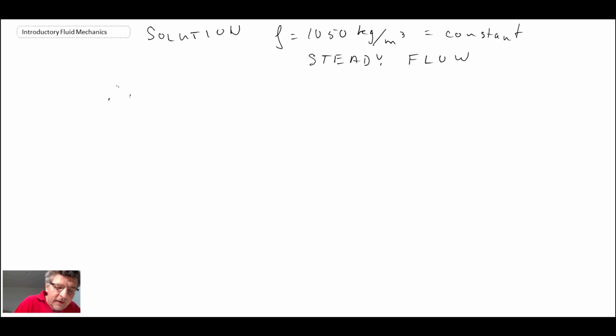So given that it's incompressible steady flow, we can write the mass conservation equation as being this integral across the control surfaces. These are the three control surfaces where we have mass crossing the boundary, so I'm going to expand that out and I'll call it control surface one, two, and three for the three inlets, or the two inlets and the one exit I should say.